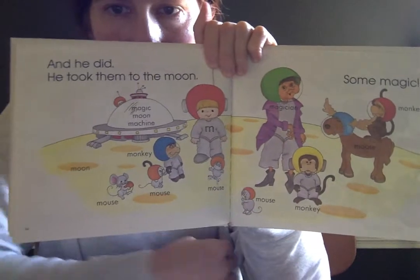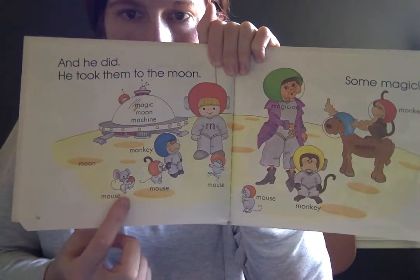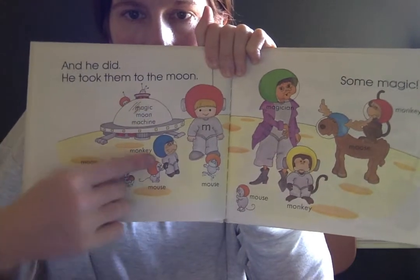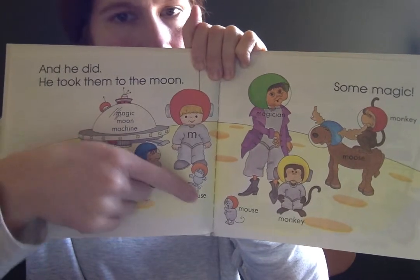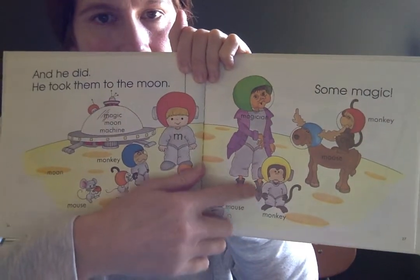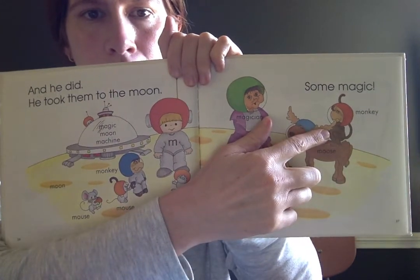Look at all of them. Okay, so they're all on the moon. There's a mouse. There's a mouse. There's a monkey. There's the magic moon machine. There's Little M. There's another mouse. There's another mouse. There's another monkey. There's a monkey. There's the magician, the moose, and another monkey.